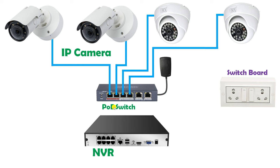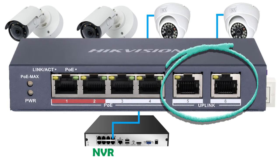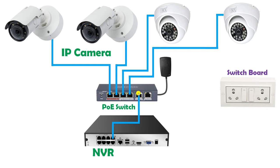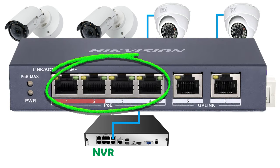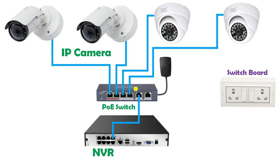Now this PoE switch — Power over Ethernet switch — we will do the connection of this switch with the NVR. Using an ethernet cable, connect one end to the NVR port at the back side. You can connect with any of the ports, but be careful — there is a port separately labelled 'Uplink'. Below the PoE ports, uplink is written, and you have to connect the cable to the uplink port. It means we have to connect the NVR to the uplink port.